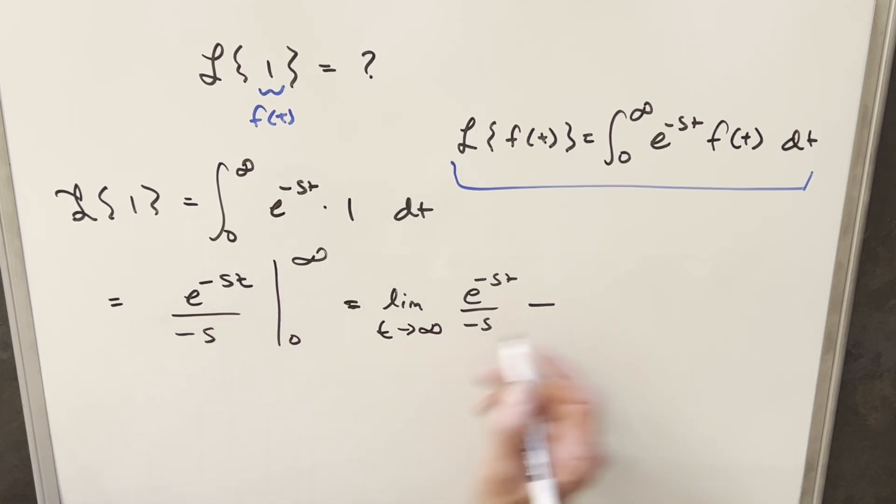So we have e to the zero here, so we're going to have one in the numerator, and we'll just have this minus s in the denominator. And of course, minus times minus is plus here, so that will clean up pretty nicely.